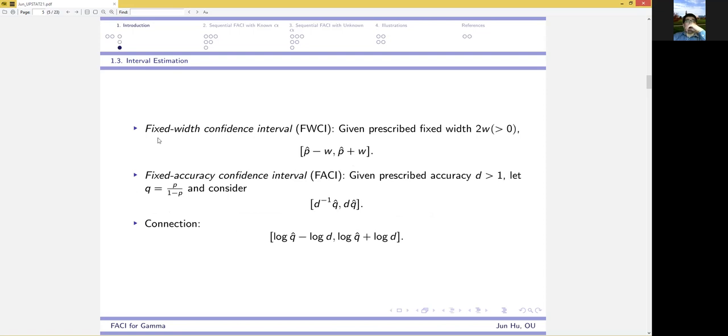In sequential analysis, fixed width confidence interval estimation is a classic problem. We estimate p by p hat plus or minus w, where p hat is a point estimate and 2w is the fixed width. However, this interval fails to account for the fact that a probability is always between 0 and 1.